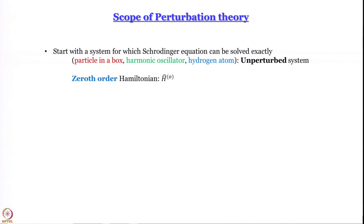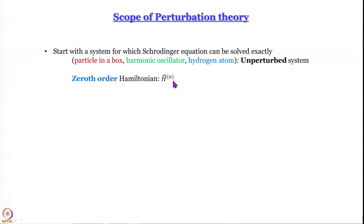The Hamiltonian for such an unperturbed system is called the zeroth-order Hamiltonian. Zero means there is no perturbation — an exact solution exists. We write it as Ĥ with a superscript (0). I may say 'H-zeroth' or 'H-zero' — please do not get confused. What I mean is always the zeroth-order Hamiltonian of the unperturbed system.